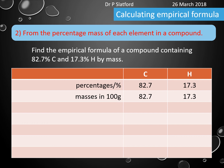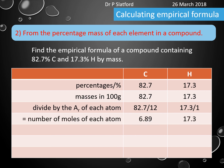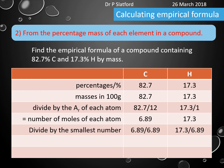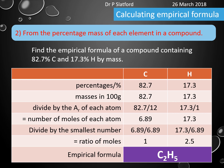We then do exactly the same as the other method: divide by the relative atomic mass of each atom to get the moles, then divide by the smallest number — in this case 6.89 — to get the ratio of moles, which is 1 to 2.5. The empirical formula must be a whole number ratio, so we can't use 2.5 directly. Therefore, the empirical formula is C2H5.